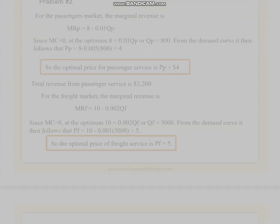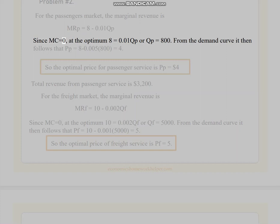Problem number 2. For the passengers market, the marginal revenue is MRP = 8 - 0.01 QP. Since MC = 0, at the optimum 8 = 0.01 QP or QP = 800. From the demand curve it then follows that PP = 8 - 0.005(800) = 4. So the optimal price for passenger service is PP = $4.